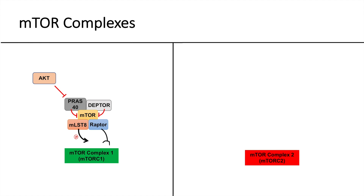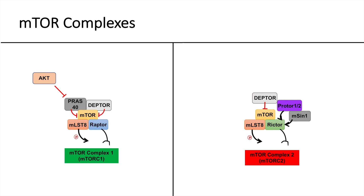With regards to mTOR complex 2, the main proteins are similar, except that instead of Raptor, there is Rictor. mLST8 or GβL again controls the kinase activity of the mTOR complex. Rictor, like Raptor, is responsible for binding to mTOR complex 2 targets. DEPTOR is again a negative regulator of mTOR complex 2. The other two proteins involved in mTOR complex 2 are PROTOR1 and 2 and mSIN1, and they both also regulate mTOR complex 2.